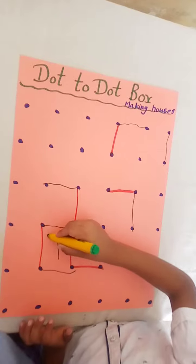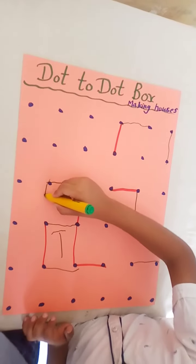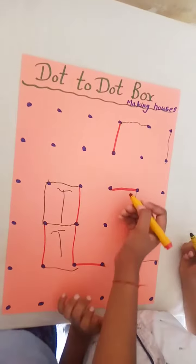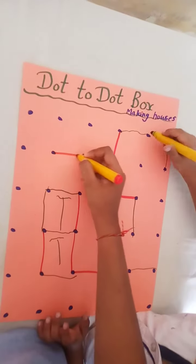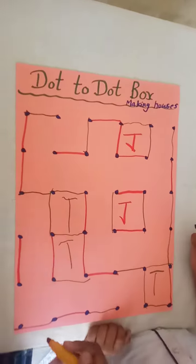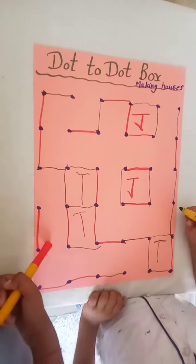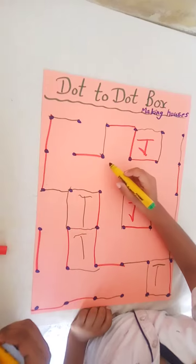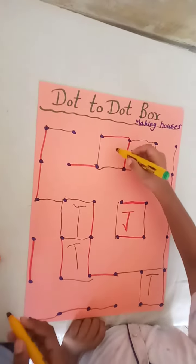Now your house is ready, write your name. Yes, two houses are ready. Now you can see a puzzle is ready. Continue the game, join the dots. Now a new house is ready.